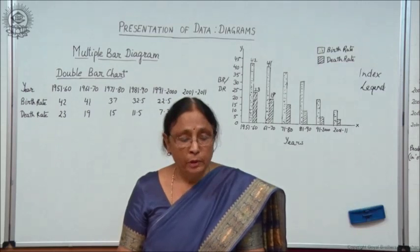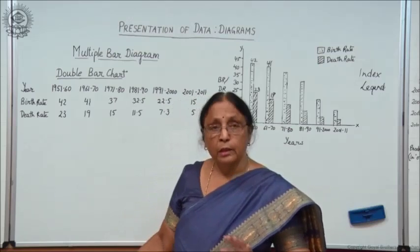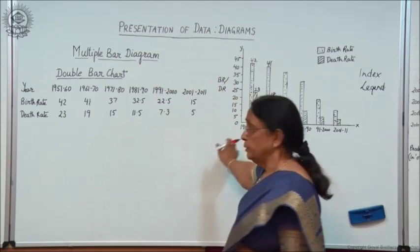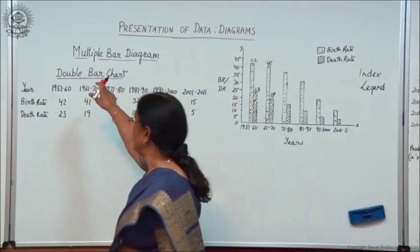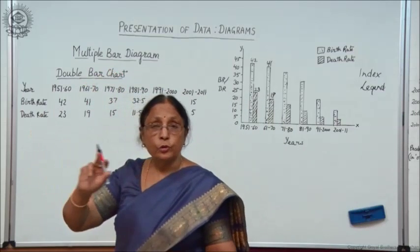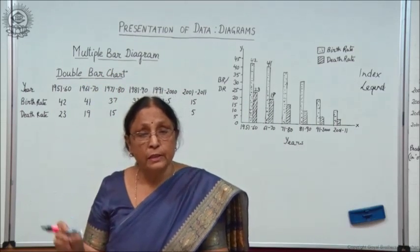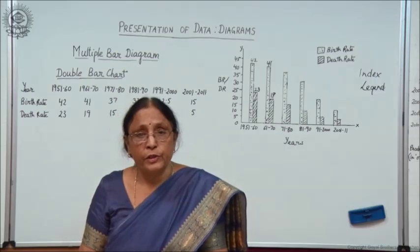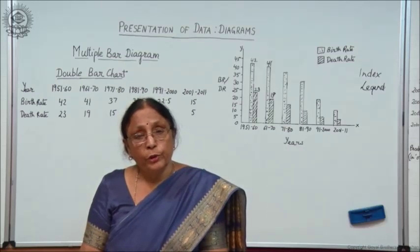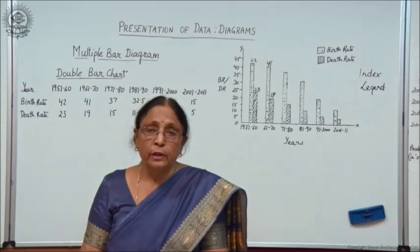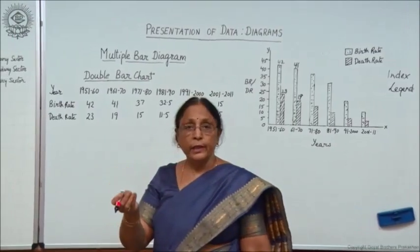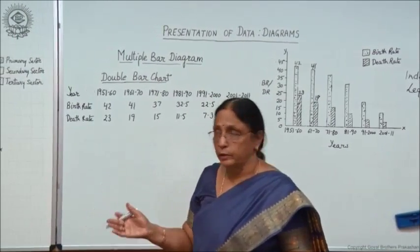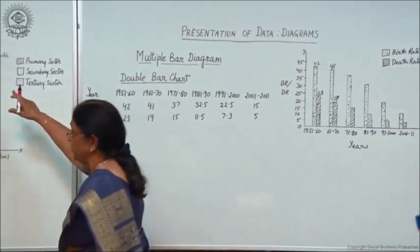So this is what double bar chart is about. As I told you, this is a multiple bar diagram. Similarly we have triple bar chart, and remember it should not be more than three bars. Stick to a maximum of three bars together; if you have to show more data, make another diagram.